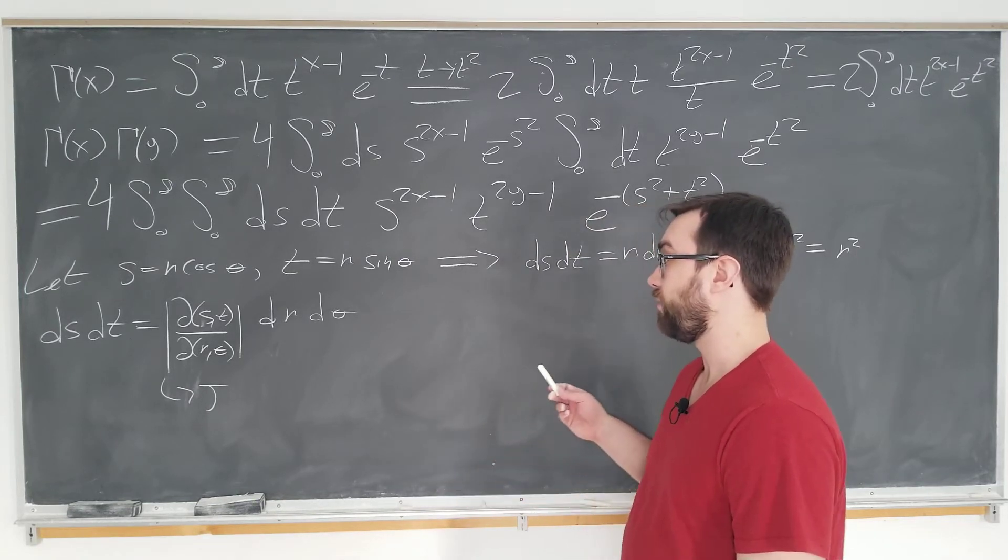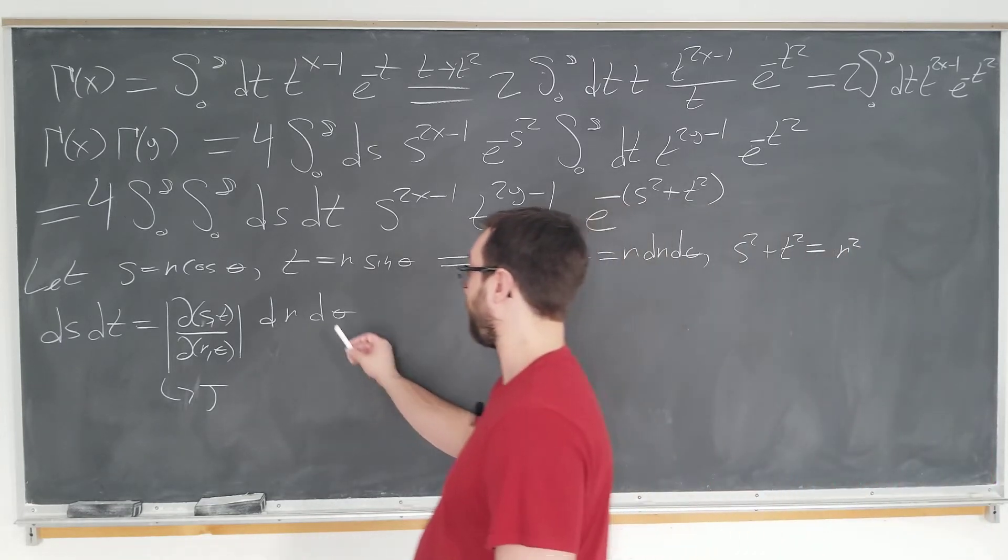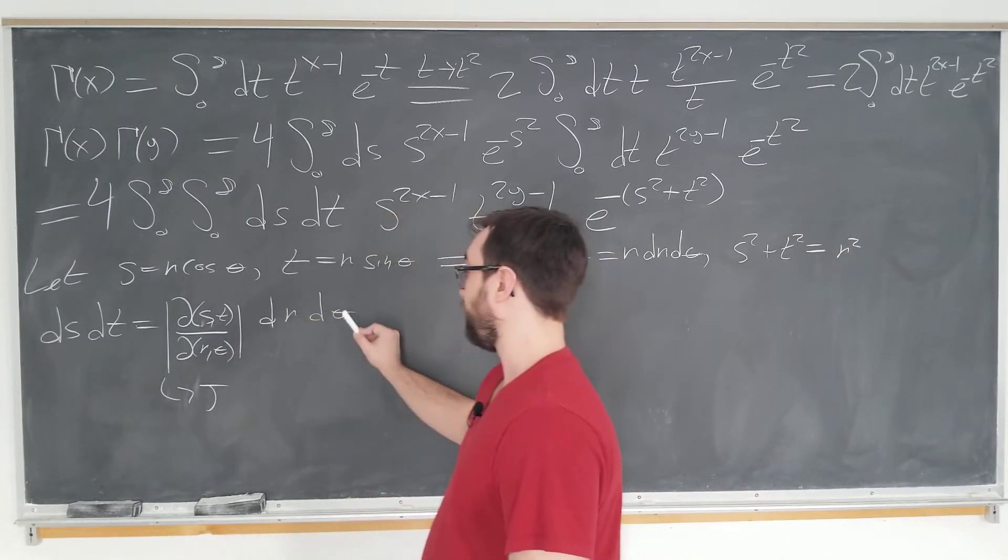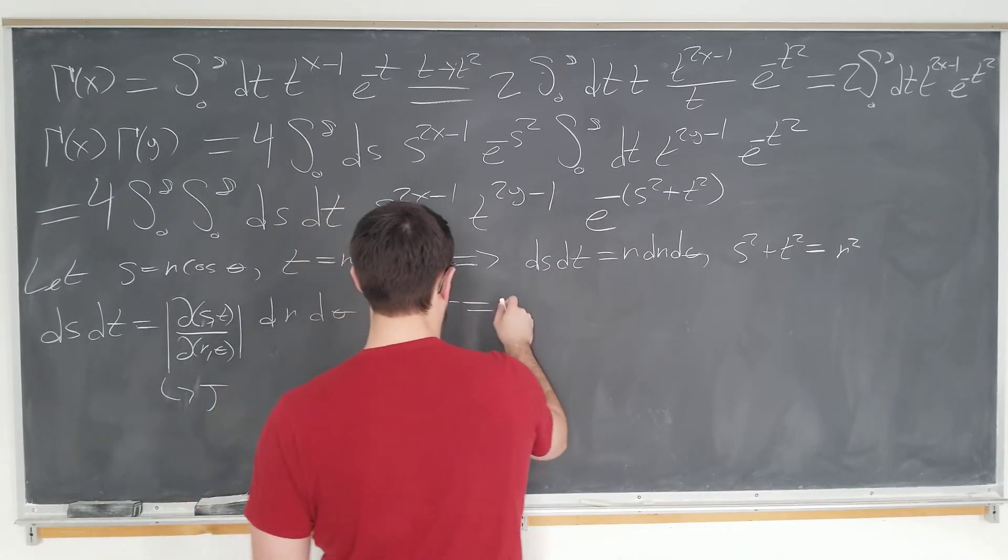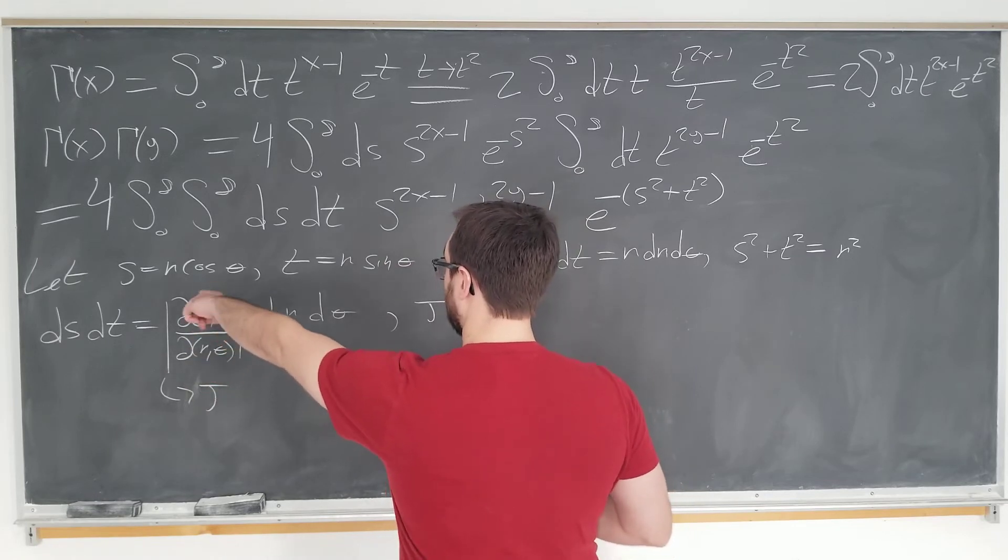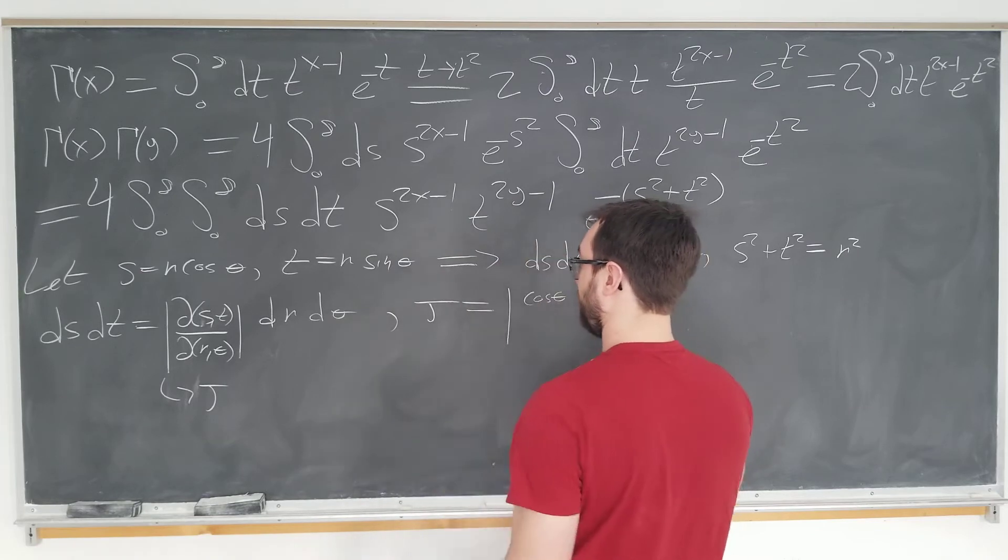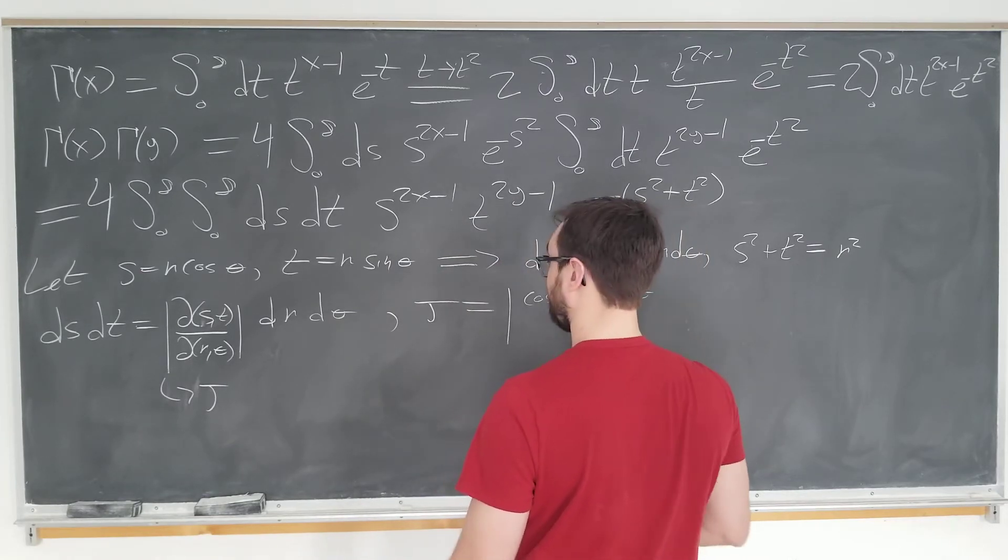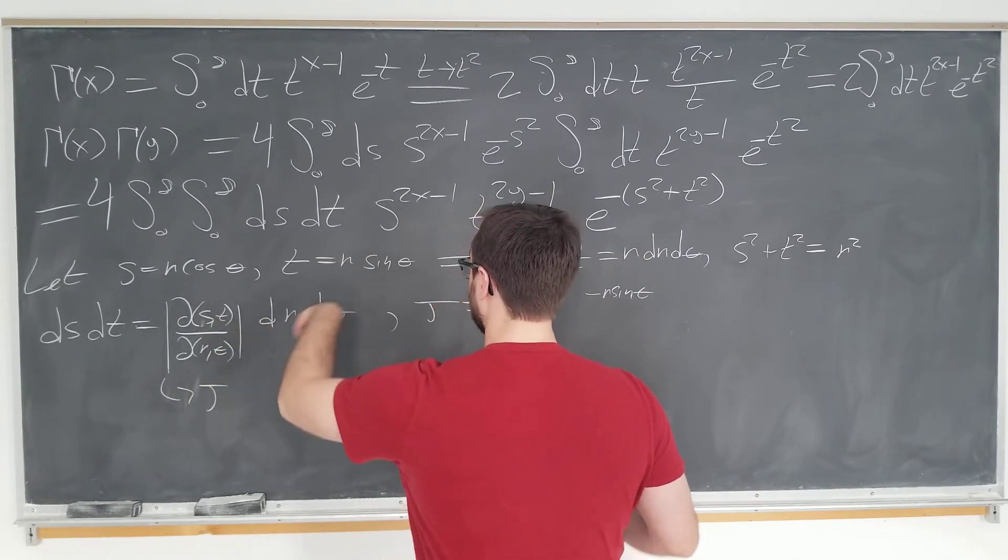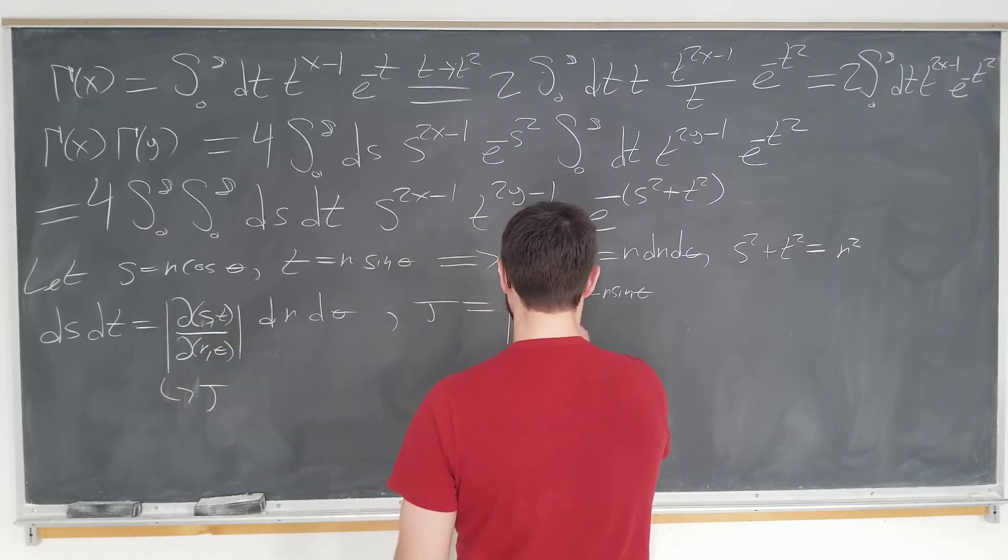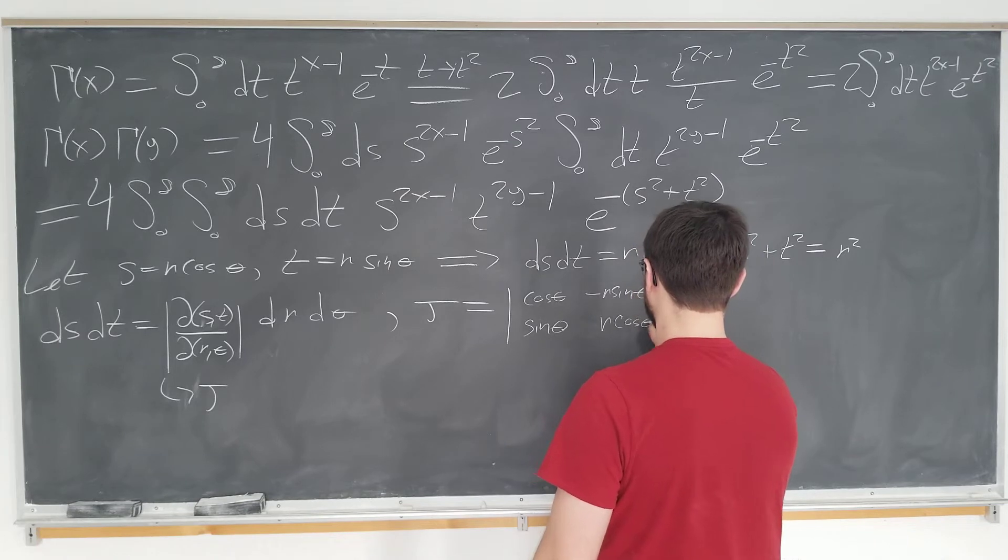We see the r's and thetas cancel out. That's how you can recall this. So, j is just going to be ds by dr, which is cosine theta, and ds by d theta, which is minus r sine theta. And we have dt by dr, which is going to be sine theta. And then dt by d theta, which is going to be r cosine theta.